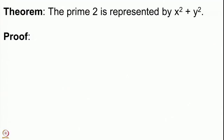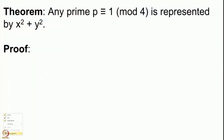One small result: the prime 2 is represented by x² + y², since 2 = 1² + 1². So we have dealt with p ≡ 3 mod 4, and with the special prime 2. The only remaining class is primes p ≡ 1 mod 4. We will prove that every such prime is a sum of 2 squares — every such prime is represented by x² + y².